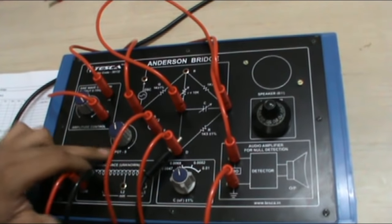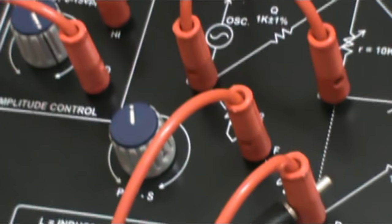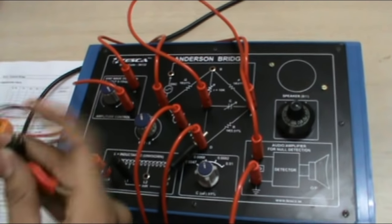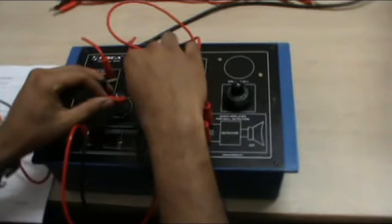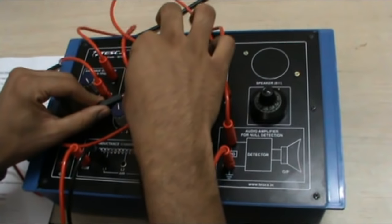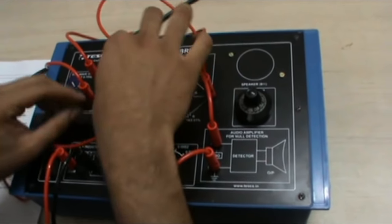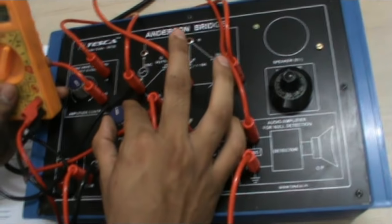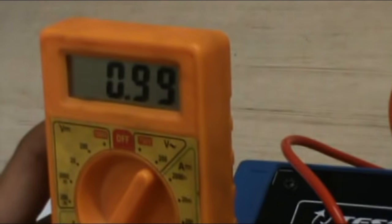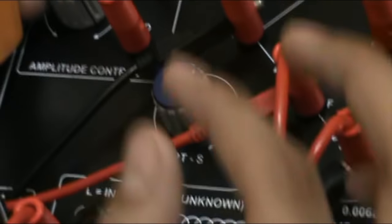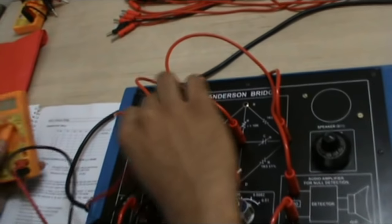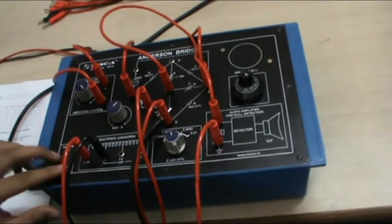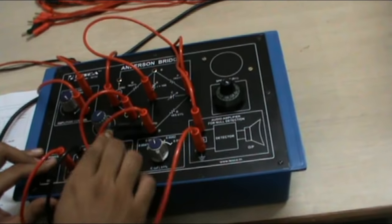First of all we have to set this potentiometer S to 1k5. With the help of this DMM we will set this potentiometer to 1kHz around. We connect this between F and C to measure the resistance. It is around 0.9kHz. Now this is approximately 1kHz. Now consider any value of C.